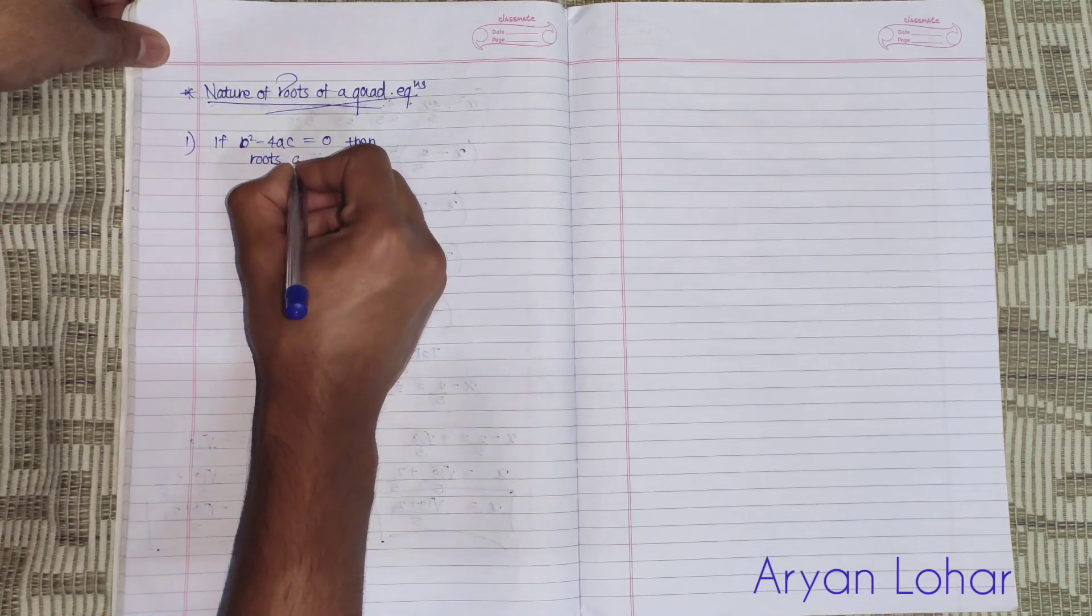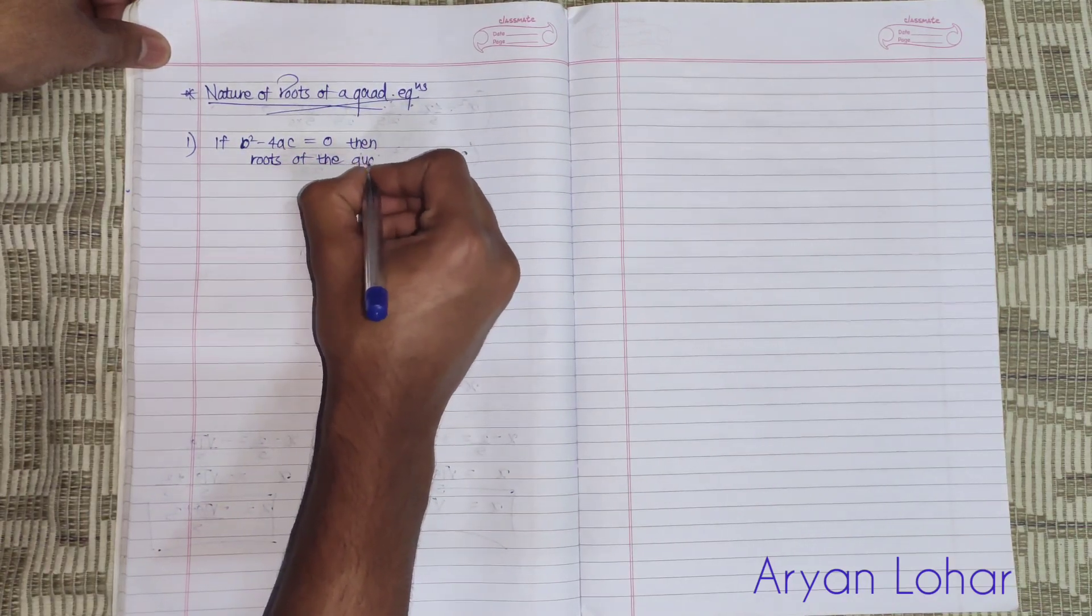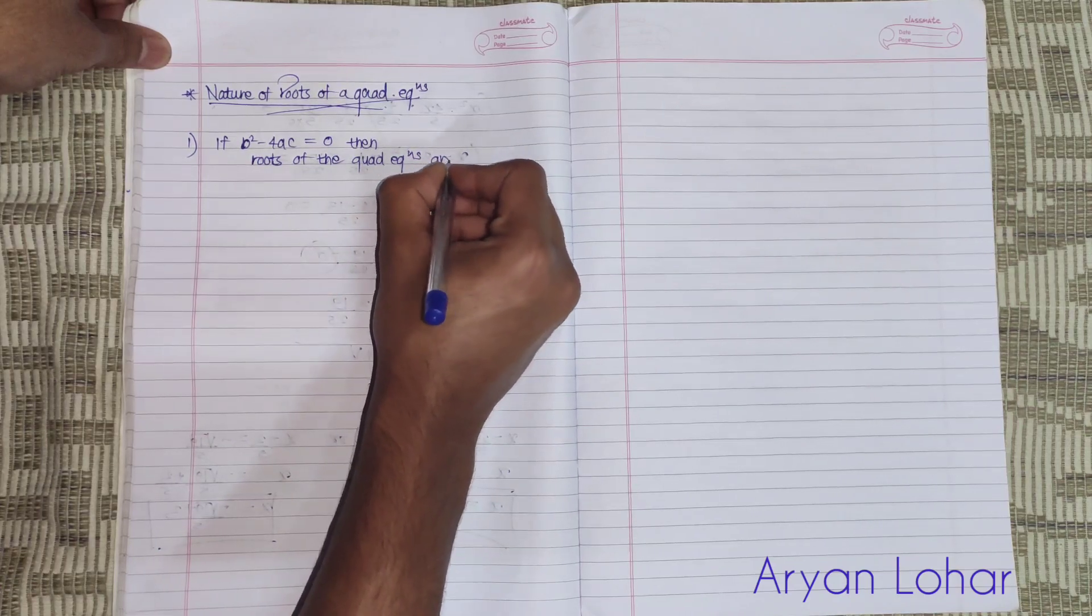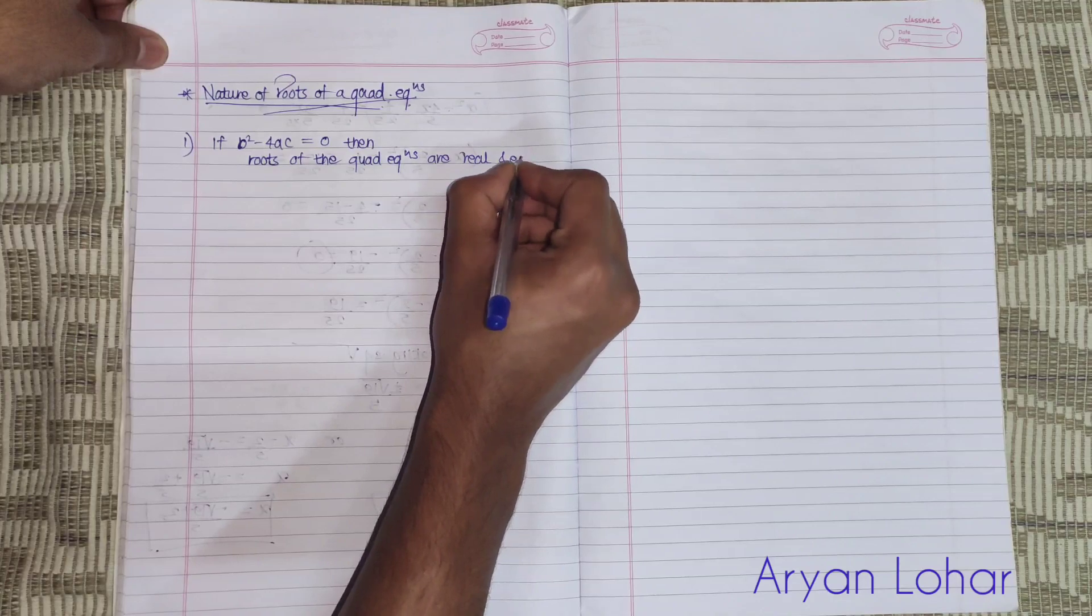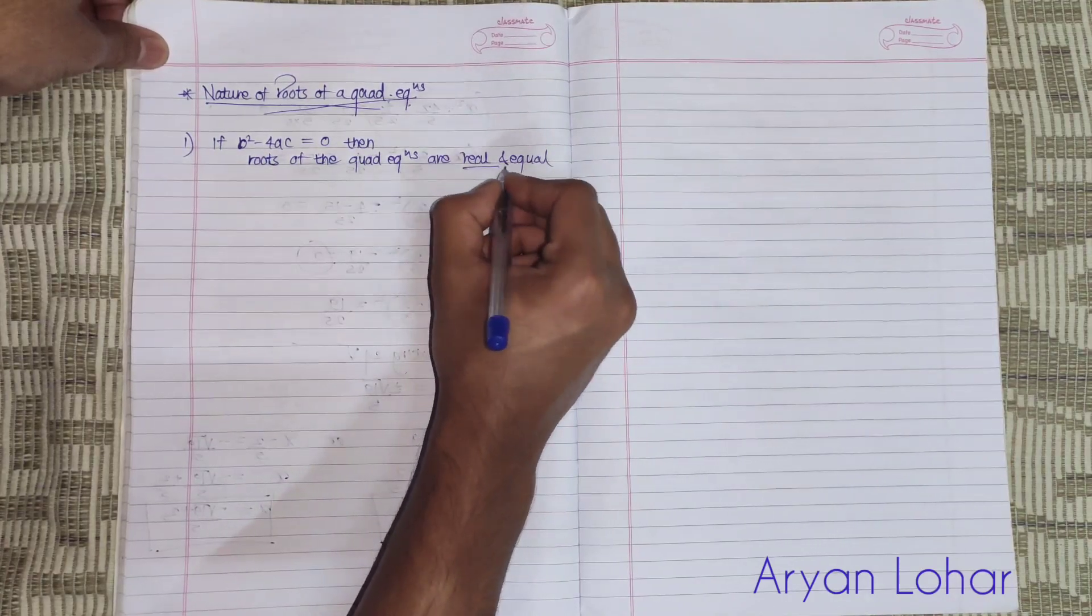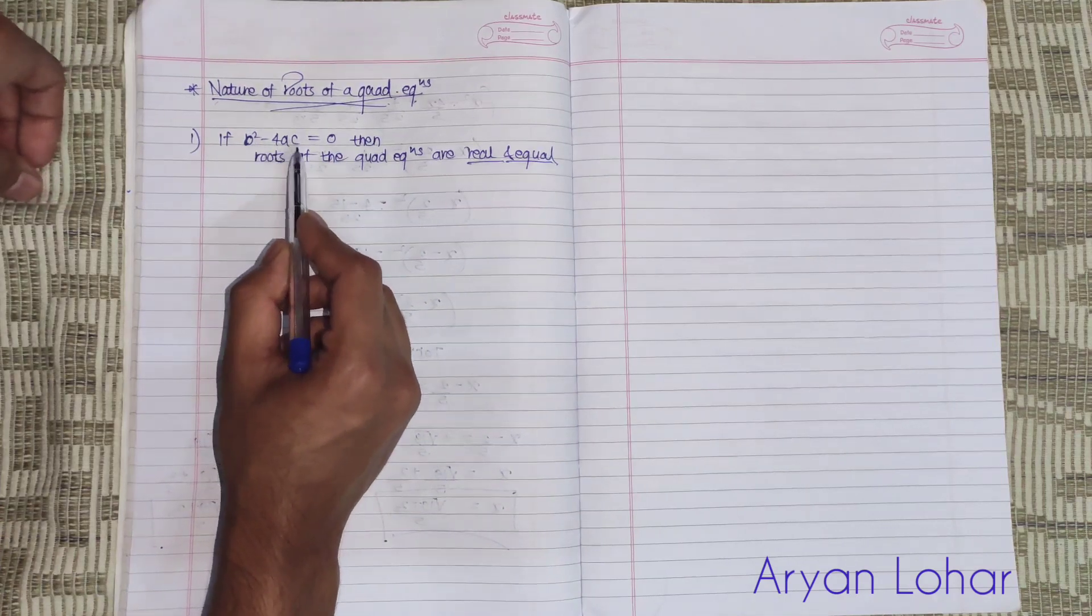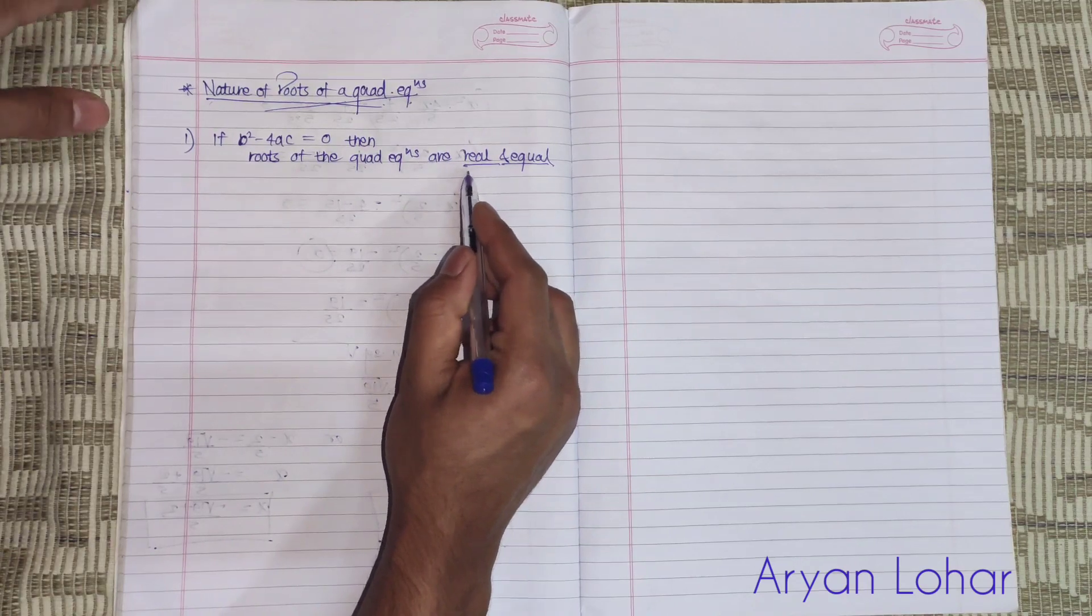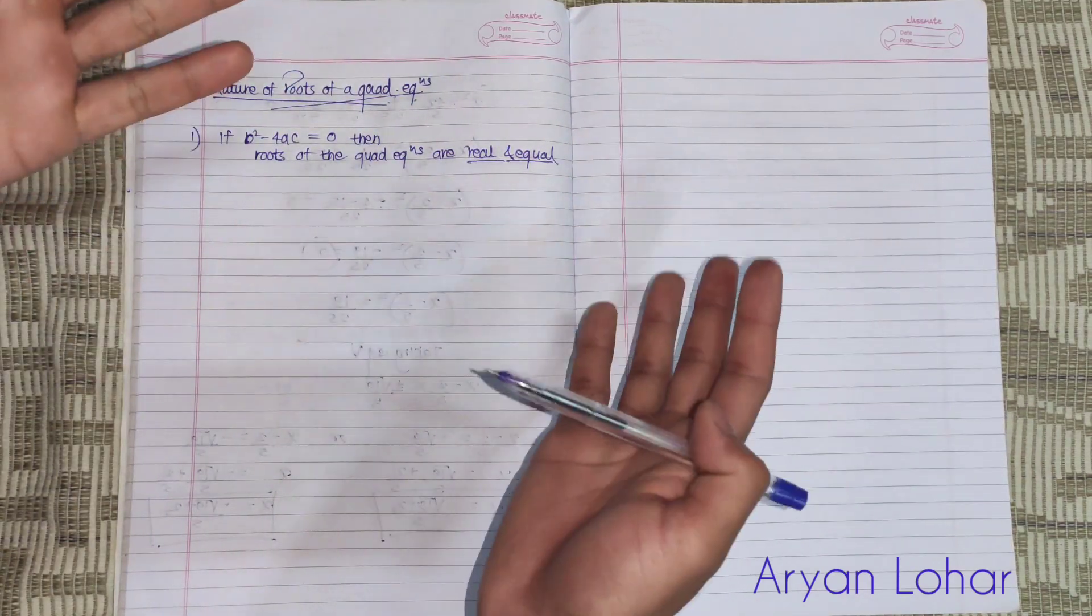...of the quadratic equation are real and equal. Got it? If value of this b squared minus 4AC is equals to 0, then the roots are real and equal. Means both roots are same and both roots are positive.